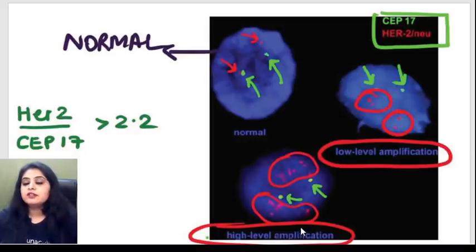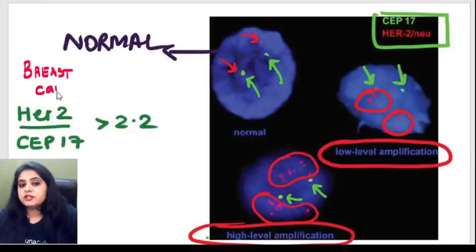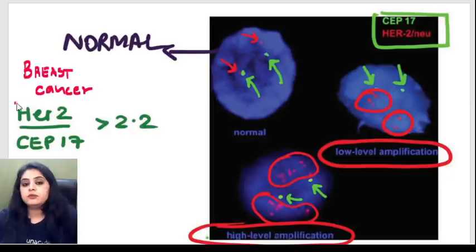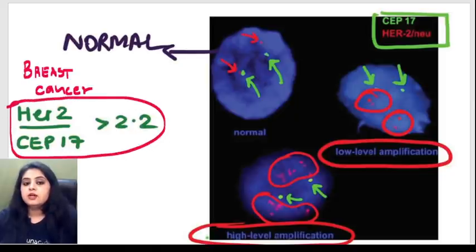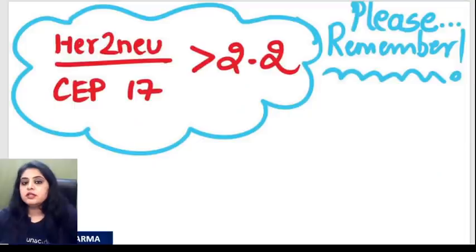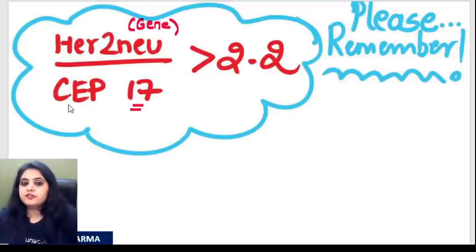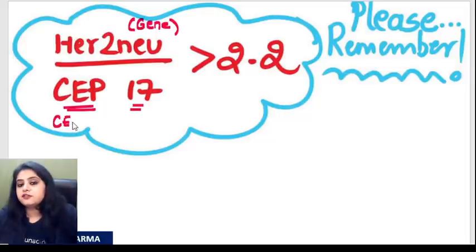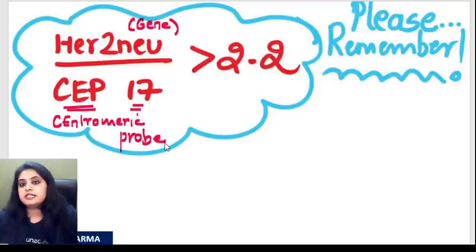What is the cutoff for breast cancer under FISH? HER2/neu divided by CEP17 should be more than 2.2. HER2/neu refers to the gene; CEP17 is chromosome 17 — specifically the centromeric probe 17. So remember: HER2/neu gene divided by CEP17 should be more than 2.2.